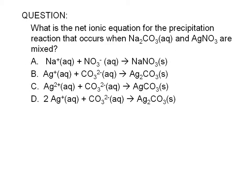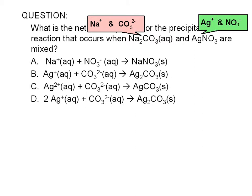Sodium carbonate gives us sodium and carbonate ions. Silver nitrate gives us silver and nitrate ions. According to our solubility rules, any compound containing sodium or nitrate ions are soluble in water. Therefore, we do not expect our precipitate to have sodium or nitrate ions.